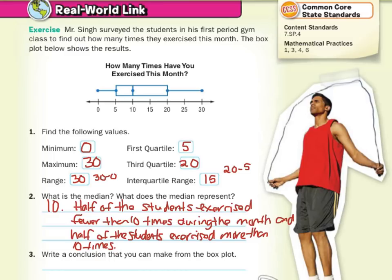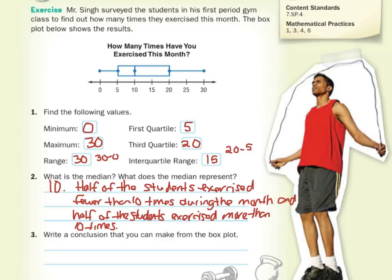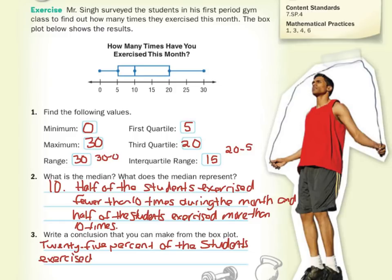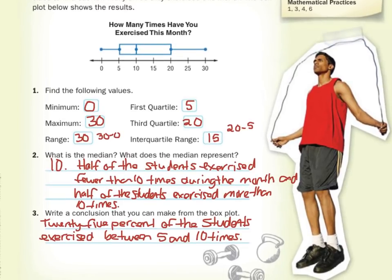A conclusion we could draw here: 25% of the students exercised between — and at this point you could pick — between 0 and 5 times, between 5 and 10 times, between 10 and 20 times, or between 20 and 30 times. For this we'll just say between 5 and 10 times. But again, you could pick any of those quartile ranges.